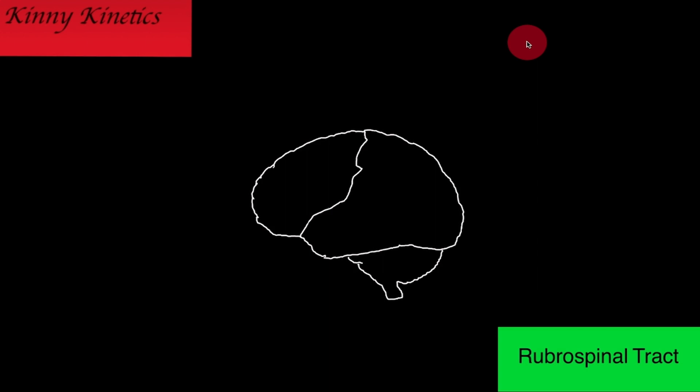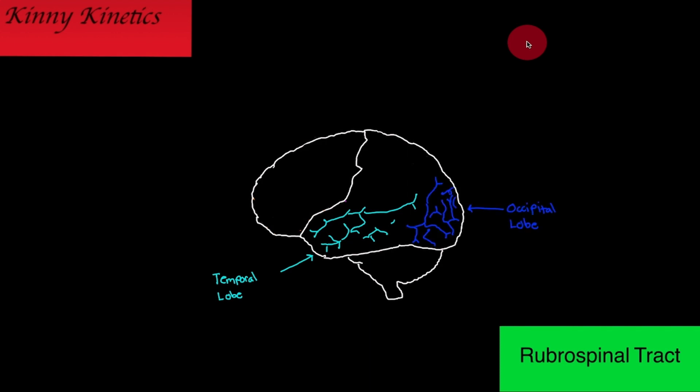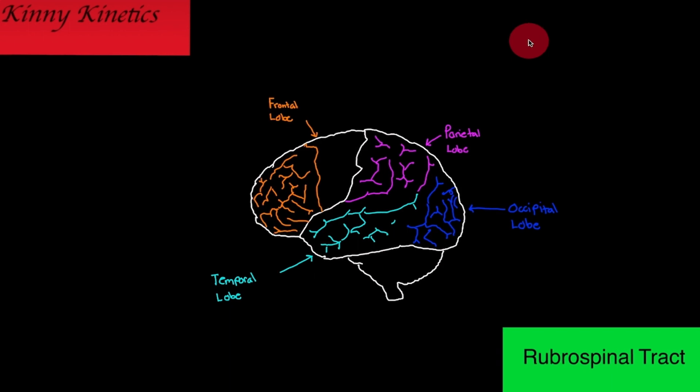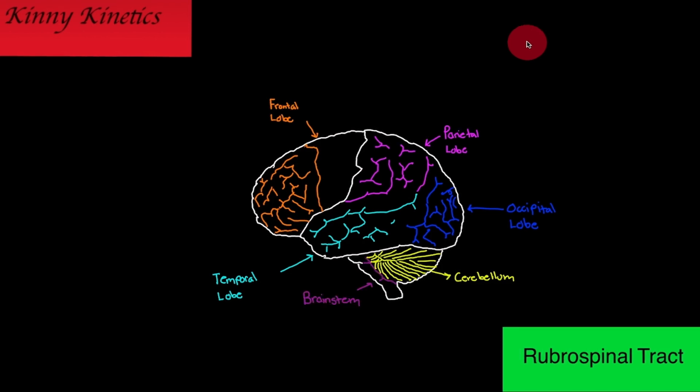I want to do a quick surface anatomy lesson of the brain. The brain contains four lobes: here we have the temporal lobe, occipital lobe, parietal lobe, frontal lobe, and at the base of the brain lies the cerebellum and the brain stem that leads to the spinal cord.